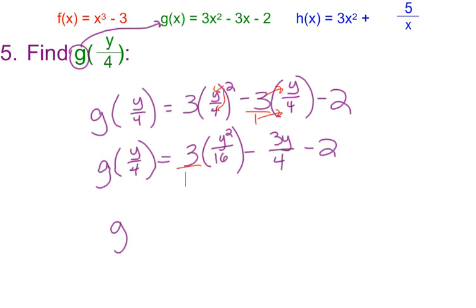Now I have one more step. I have to multiply again another fraction here. This is 3 over 1. So as I write this, this is my last step. I would have 3y squared, because I'm multiplying across the top and across the bottom, over 16, minus 3y over 4, minus 2.